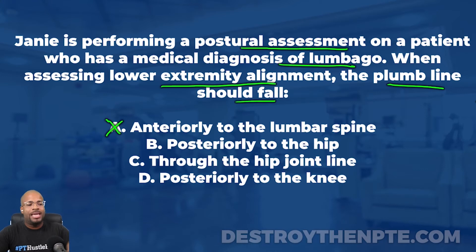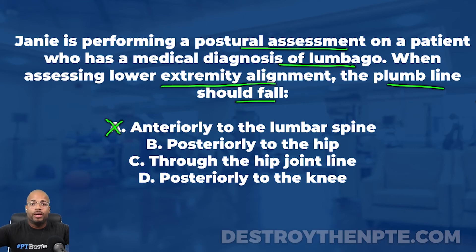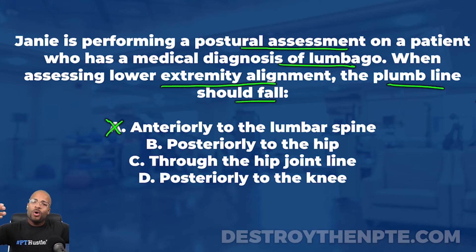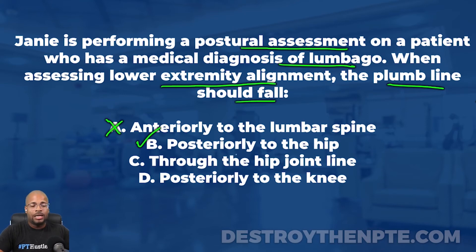Let's go to B: posteriorly to the hip. One thing I remember from school — we were looking at the sacrum, the lumbar spine, and the hip. When dealing with the sacroiliac joint, the plumb line should fall anteriorly to that. But when looking at the hip, the plumb line should fall posteriorly to it. So: anteriorly to the sacroiliac joint, but posteriorly to the hip. I like B. Now C says through the hip joint line — I don't like that one, because the plumb line should fall posterior to the hip joint, not through it. Put an X next to C.